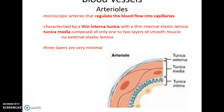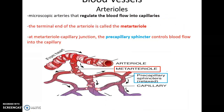Arteries finally break down into really small, microscopic arterioles that help to regulate blood flow in the capillaries. They have a thin internal tunica, a thin internal elastic lamina, and a thin tunica media made up of one or two layers of smooth muscle cells, no external elastic lamina — basically a very minimal structure.